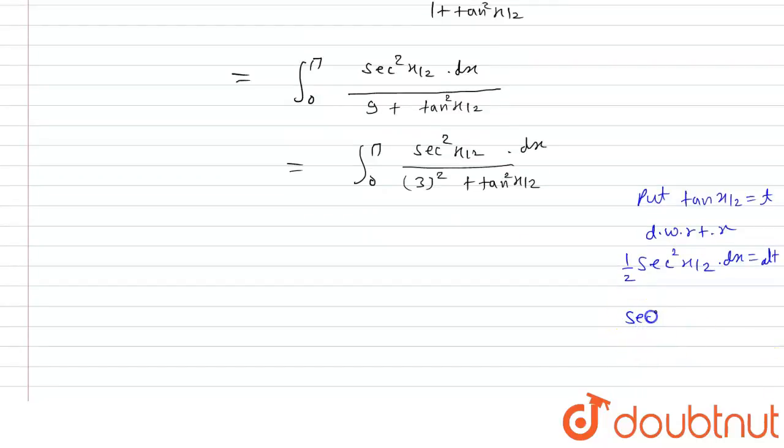So that is sec square x by 2 dot dx is equals to 2 times dt.